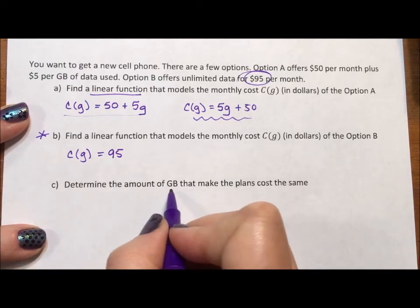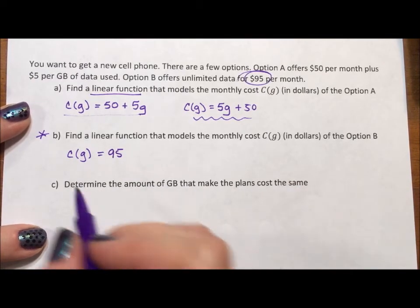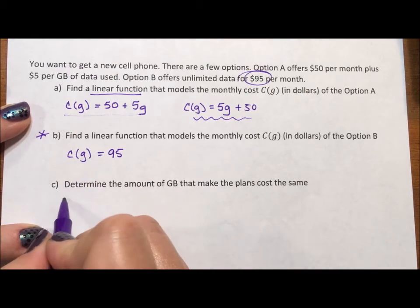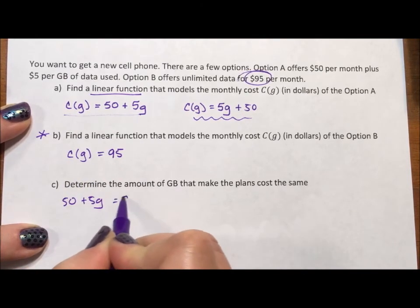Okay. So determine the amount of gigabytes that makes the plans cost the same. So how many gigabytes makes 50 plus 5g equal to 95?